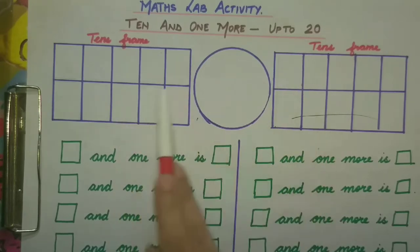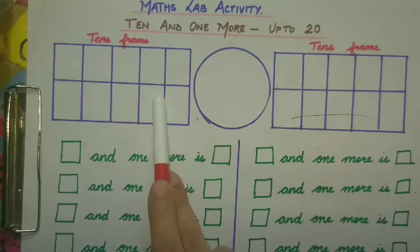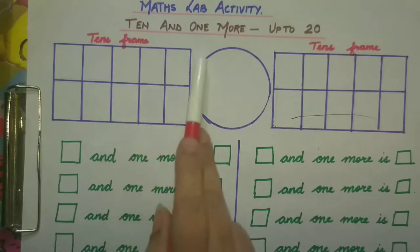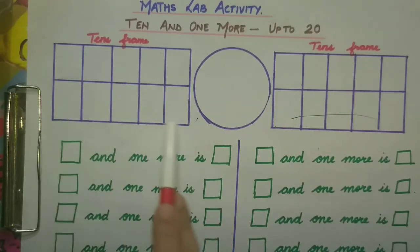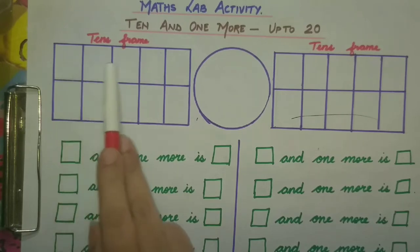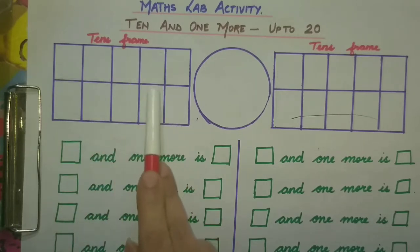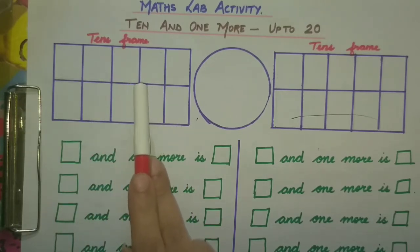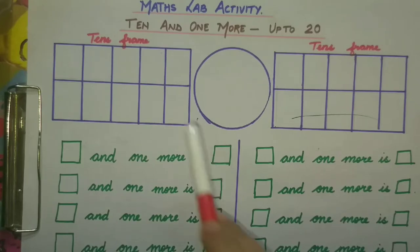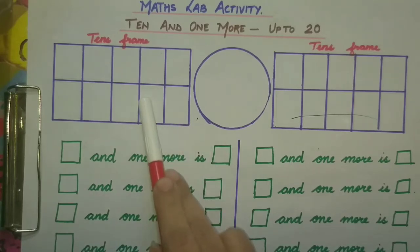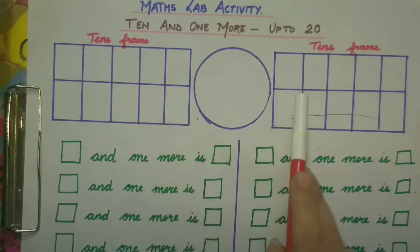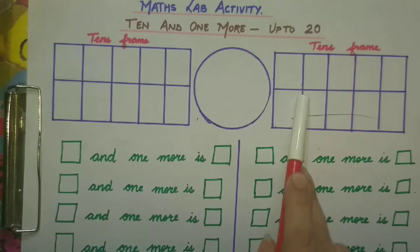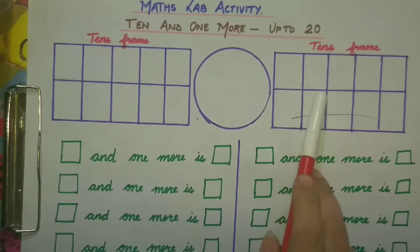These are two ten frames. You know what a ten frame is — in the ten frame we can put things up to 10. So this is a ten frame and this is also a ten frame. Let's start the activity.